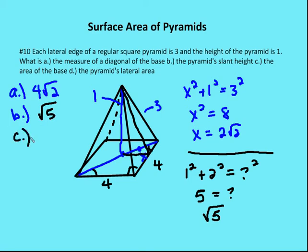Now let's tackle part C, which is pretty straightforward — they want us to find the area of the base. We know that one side length of the square is four, so the area of our square is just 16 units squared.